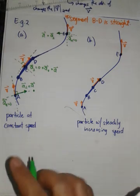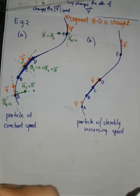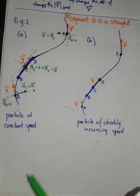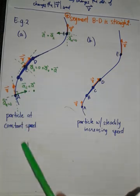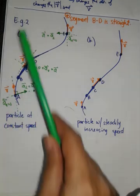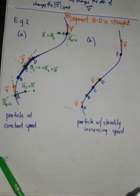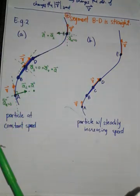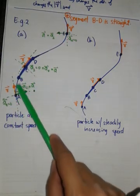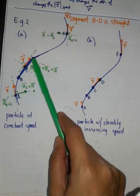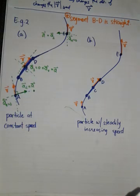Now, let's go to situation B. We saw here that when constant speed, there's no A parallel. A perpendicular is present if there's a curve path needed. If straight, there's no A perpendicular.